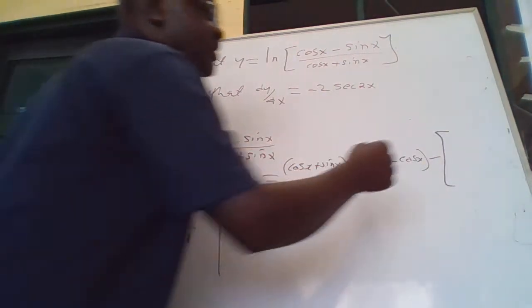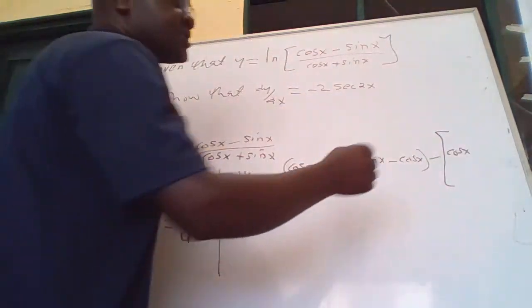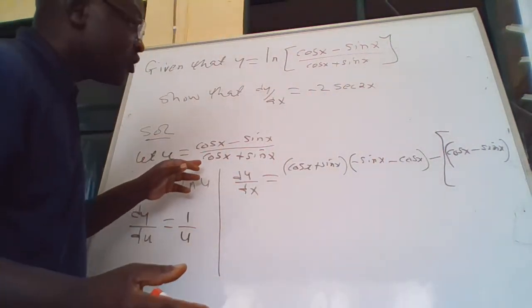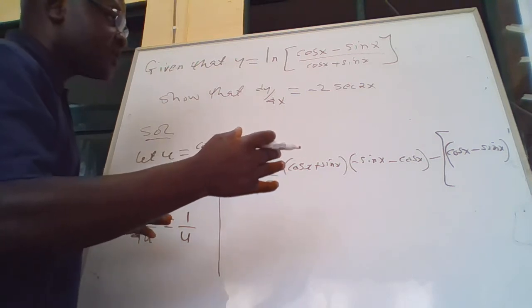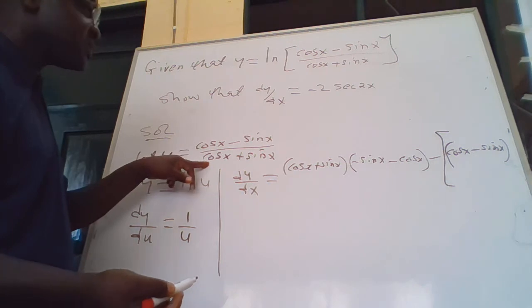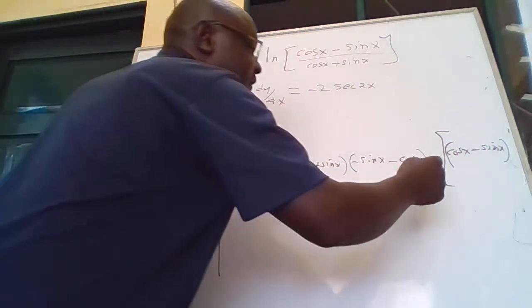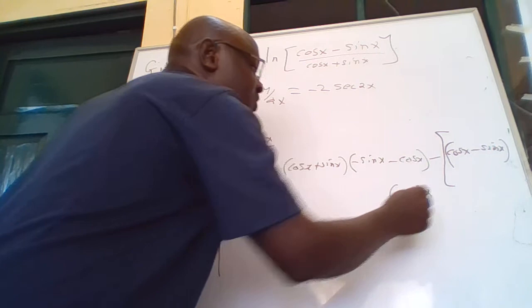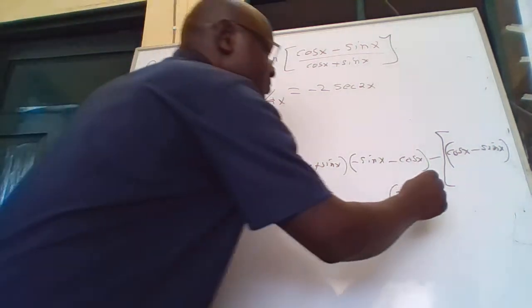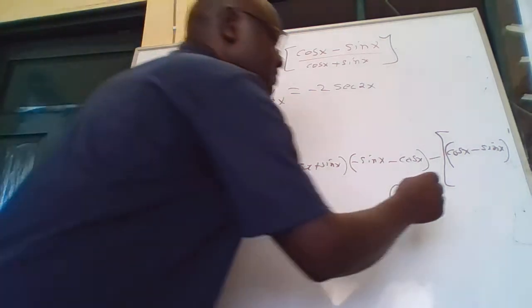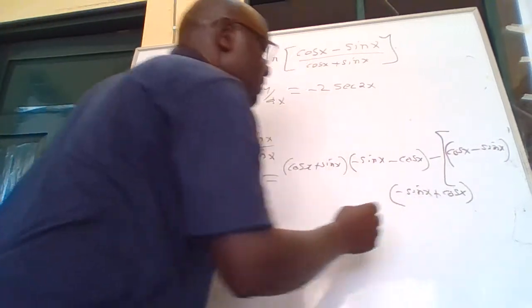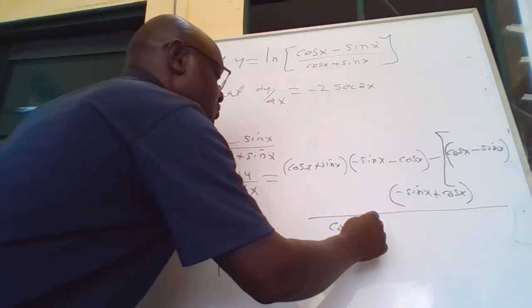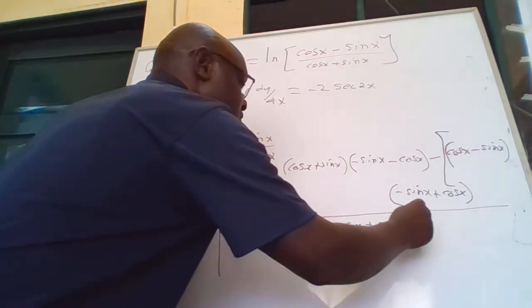Opening that bracket: cos x minus sin x. Then we put down the top and differentiate the bottom. When we differentiate cos x you get negative sin x, and when we differentiate sin x you get cos x. All of these are over the bottom squared — (cos x plus sin x) squared.